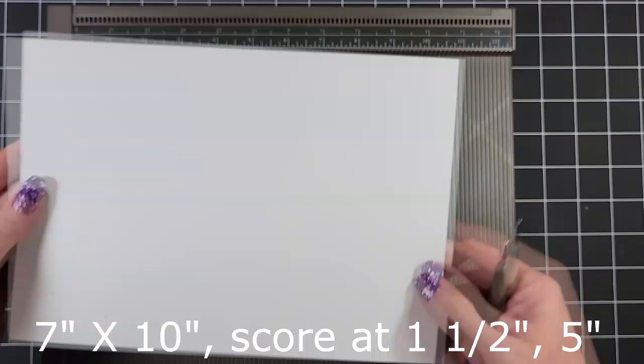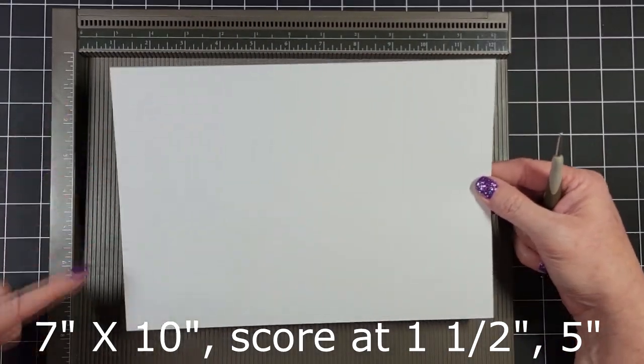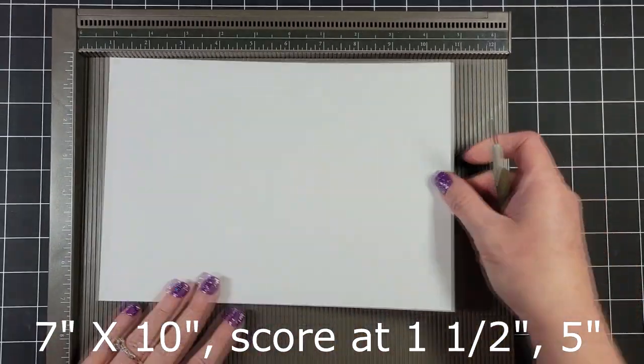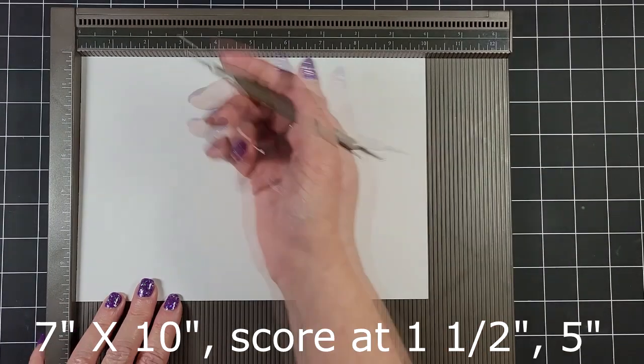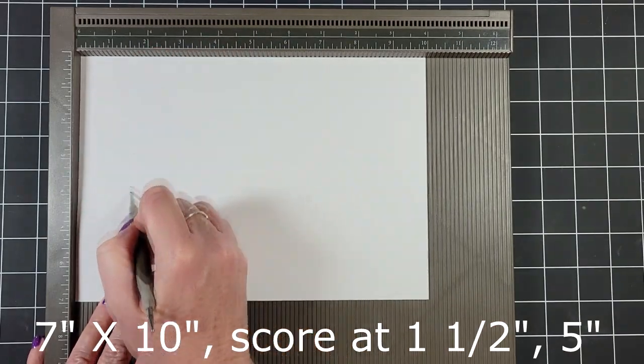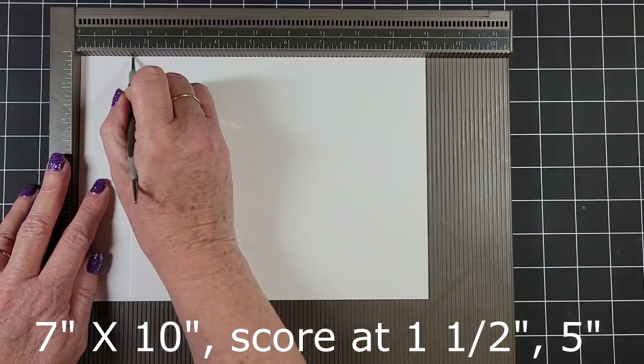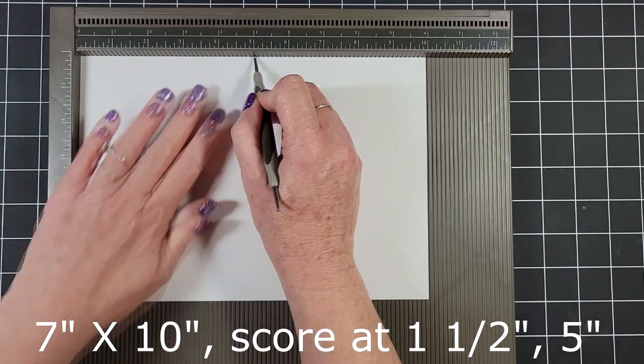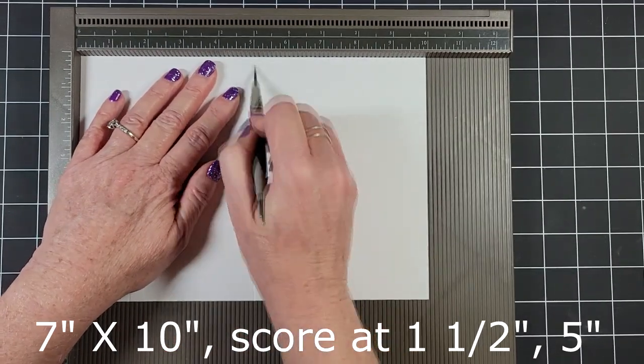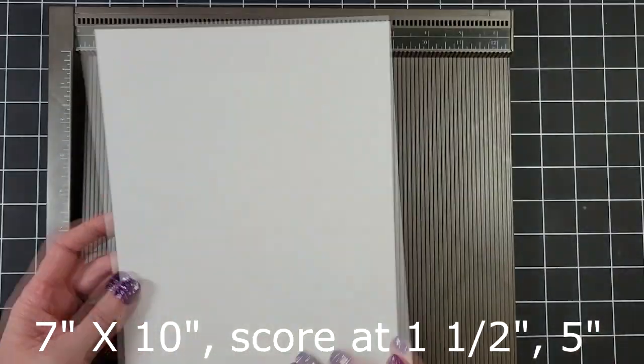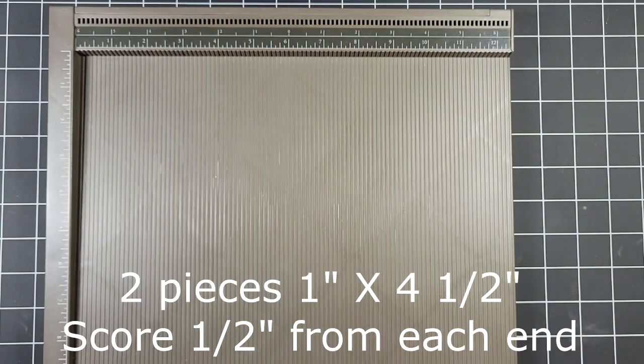Alright, so we have a 7 inch by 10 inch piece of white cardstock here. And we're going to score that at one and a half and again at 5 inches. So this will be our card base.